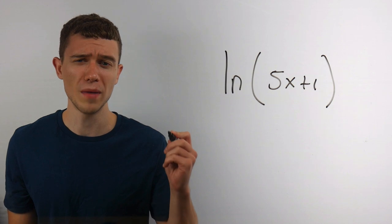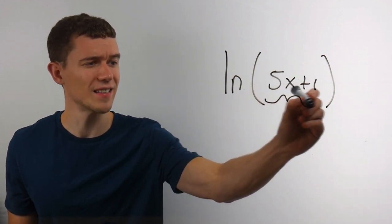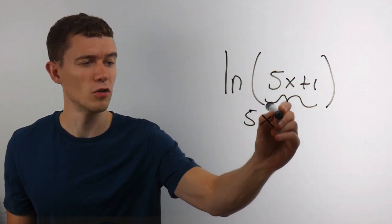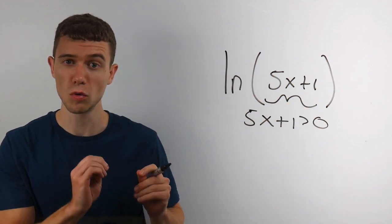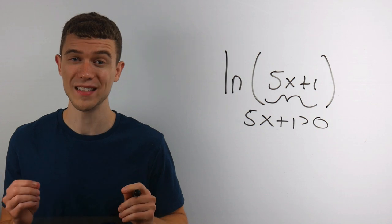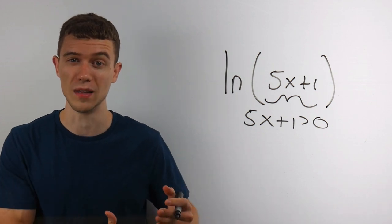So what do we do? To find the domain, we always take the inside and we have to ensure that it's positive. It's different from square roots. It cannot be 0 on the inside. You'll get a vertical asymptote there.